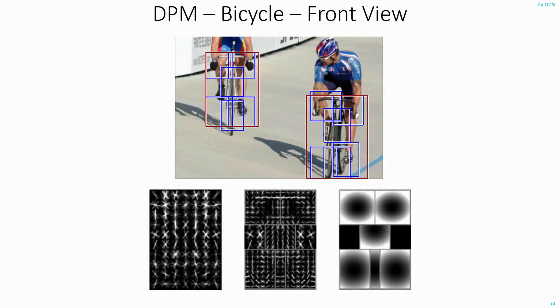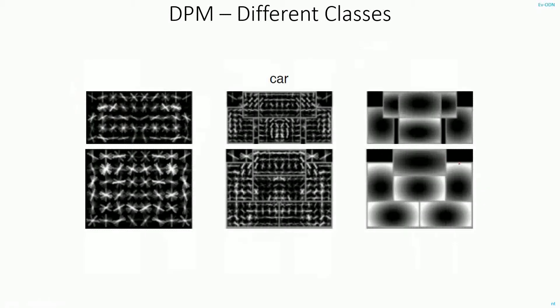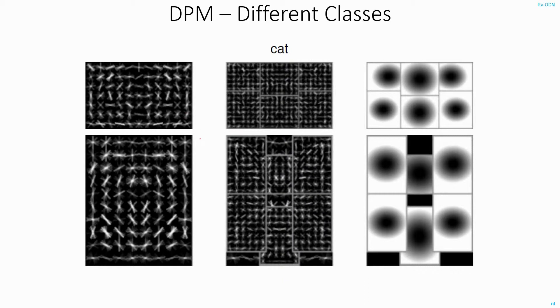And this detector for the frontal portion of the bicycle. And two DPM detectors for humans, probably this in the standing position and this in some other pose, maybe sitting. And two different detectors for the bottle. We have already seen the detectors for the car, this for the cat, etc. In this way, you can train DPM detectors for all other objects.